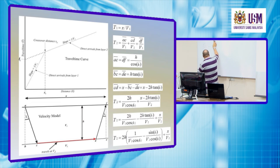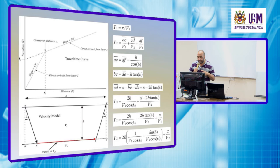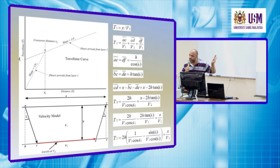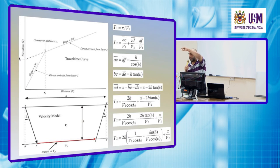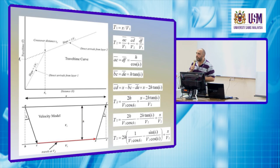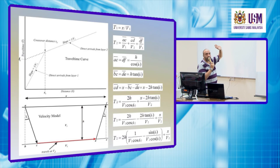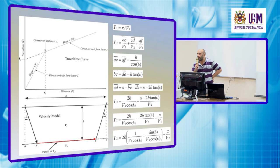Most of the mathematics here is algebra, so it is not so difficult. If you exert enough effort and understand the basic principle you will never forget these equations — you will understand the route from the starting point to the final relation without memorizing. We define T1 as the travel time for direct waves, and T2 as the travel time of the refracted wave.